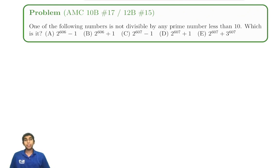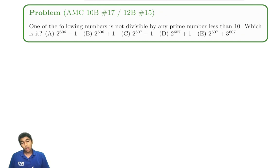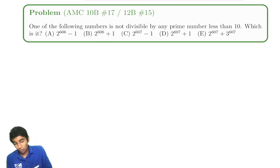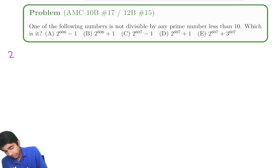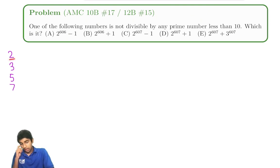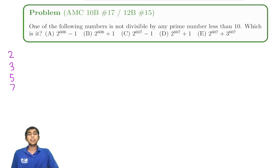Let's now solve this tricky number theory problem that has a cool solution. One of the following numbers is not divisible by any prime number less than 10. Which one is it? The primes less than 10 are 2, 3, 5, and 7. We'll check each of these primes individually using the process of elimination.